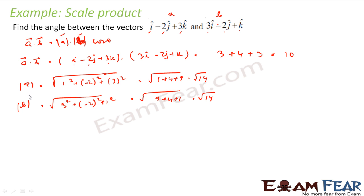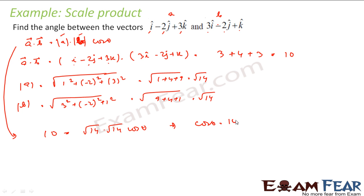So I have magnitude of a, magnitude of b, and a dot b. Putting everything into the equation: a dot b equals 10, magnitude of a equals root 14, magnitude of b equals root 14, so 10 equals root 14 into root 14 into cos theta. Solving this, cos theta equals 10 by 14, that is 5 by 7. So theta equals cos inverse of 5/7. Finding this was not difficult because I knew vectors a and b, and from there I found a dot b, magnitude of a, magnitude of b, and cos theta.